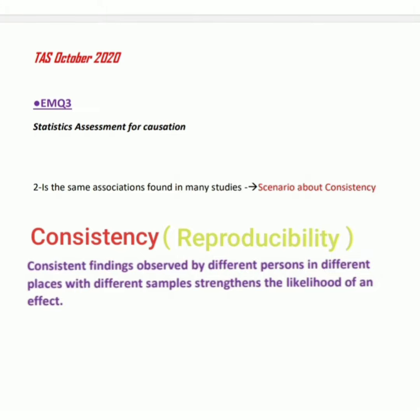In the definition, they are mentioning that the findings are observed by different persons, different places, different samples. That means there are much more studies, many studies present in consistency or reproducibility. If we check the question, they give a scenario stating the key point that the same associations are found in many studies.